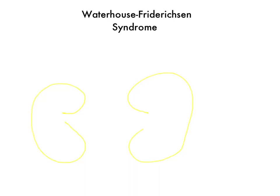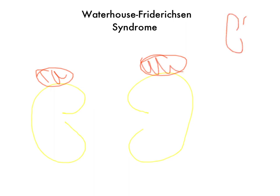Now we're going to talk about Waterhouse-Friderichsen syndrome. It's bilateral destruction of your adrenal glands due to infection with Neisseria meningitidis.